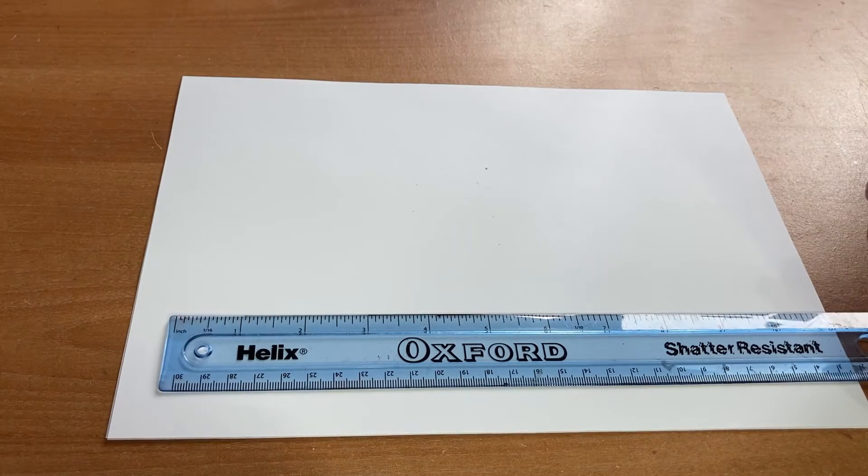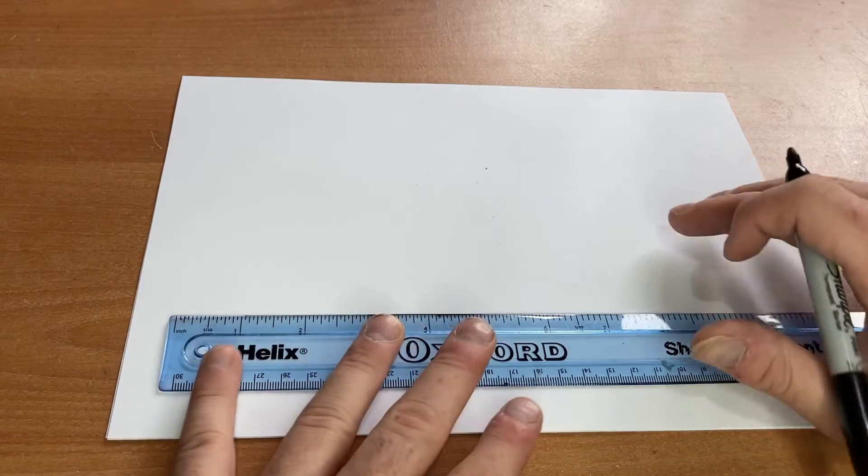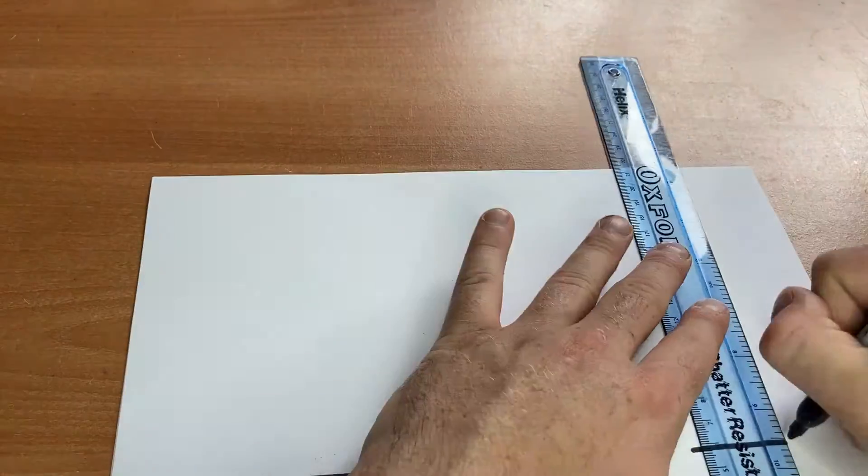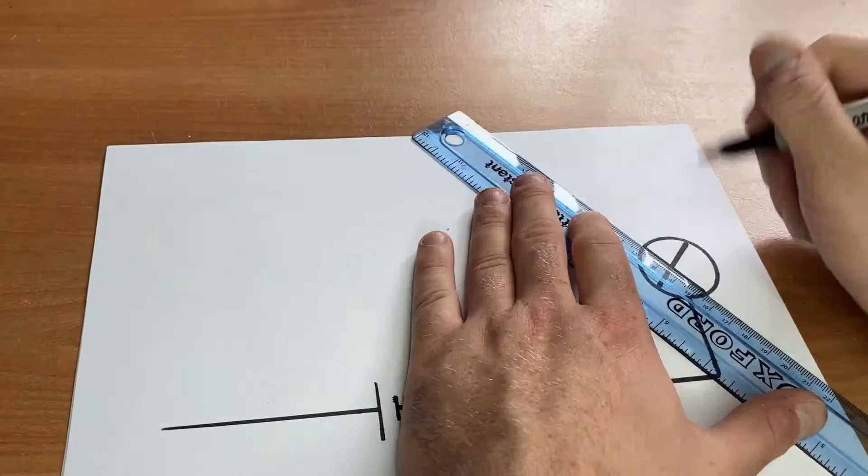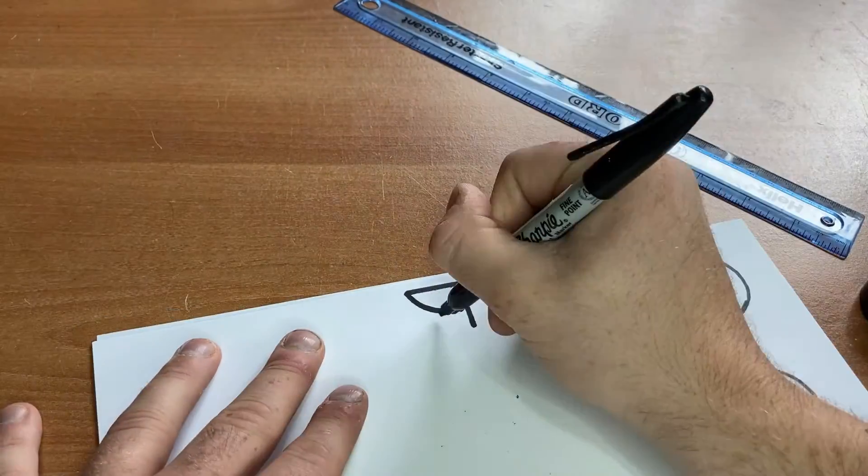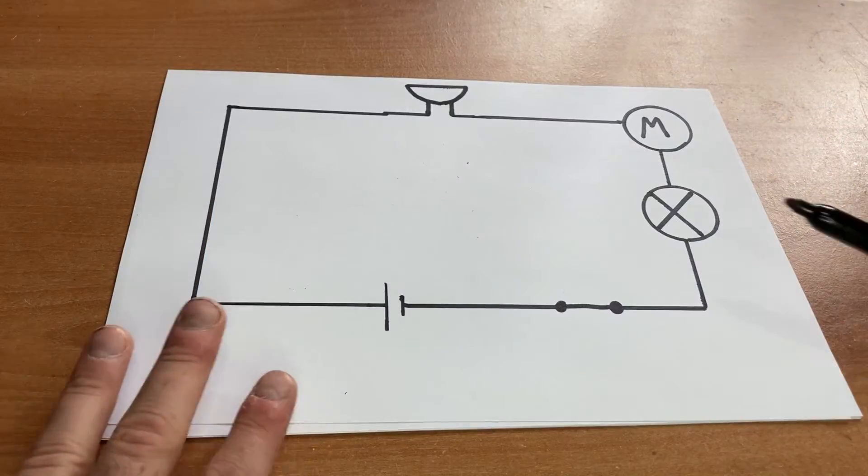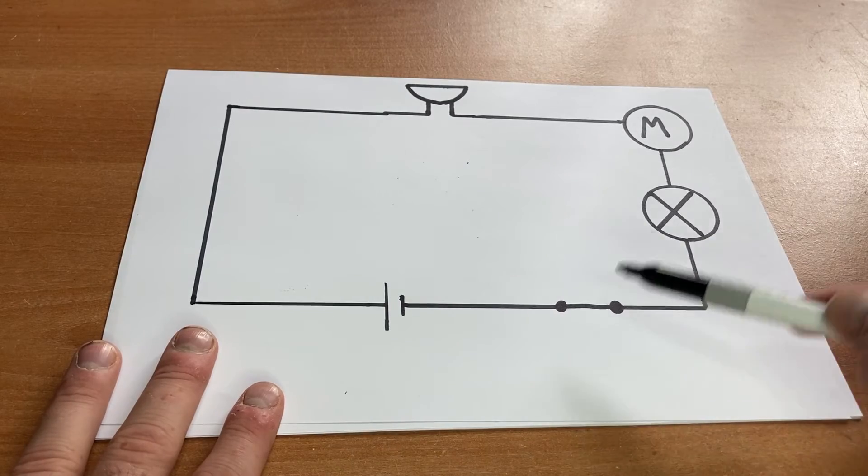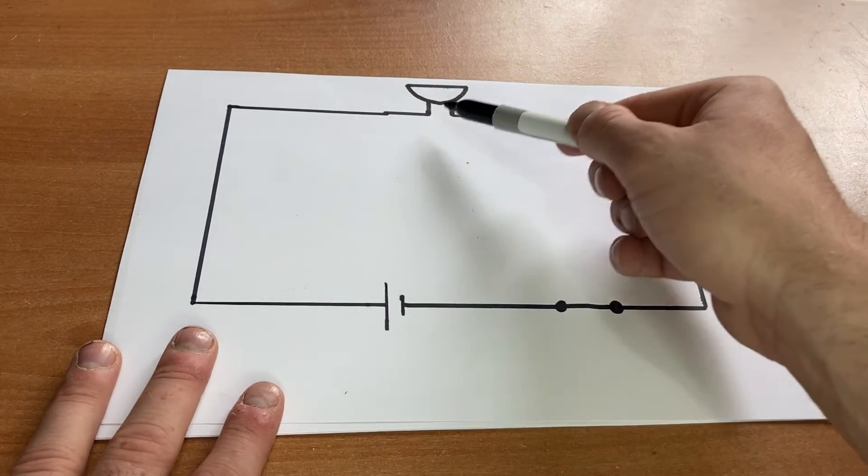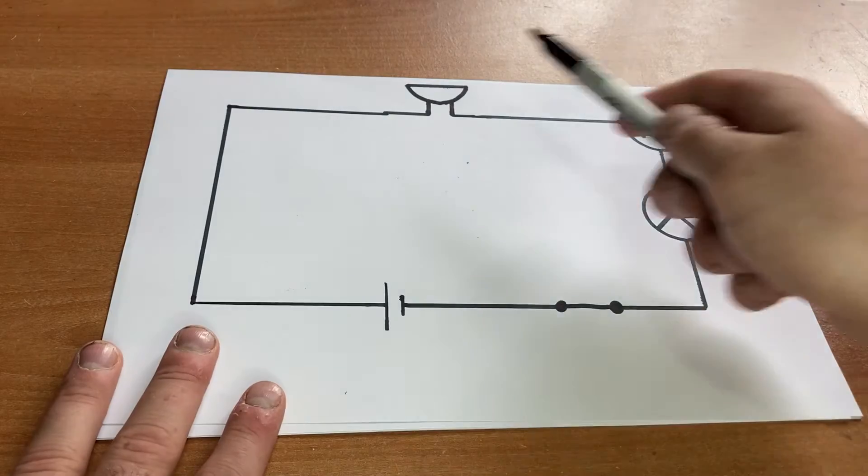Now here's what it can look like when I put a few of these things all together in a circuit. A circuit with a battery, a closed switch, a light bulb, a motor, and a buzzer connected by wires.